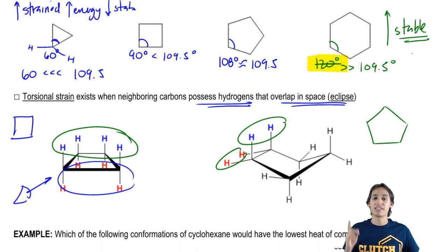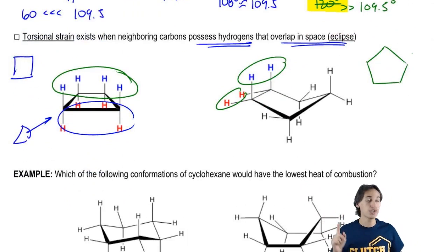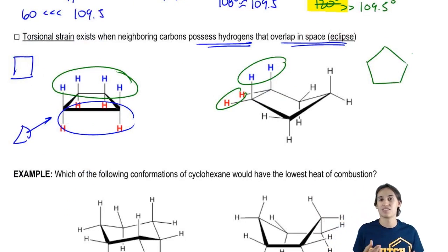The answer is that it's actually torsional strain. Torsional strain is the reason that cyclopentane isn't very stable or isn't as stable, because no matter how much it folds, it's always going to have some overlapping H's here and some overlapping H's here.